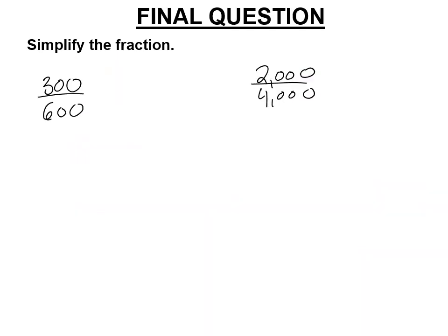Do both of those. Well, 300 is half of 600. All right. So that means this must be 1/2. 2,000 is half of 4,000. Both of those are equal. They are both equal to each other. And they are both equal to 1/2.